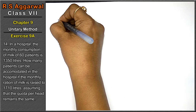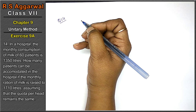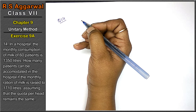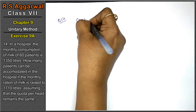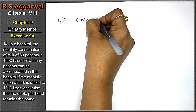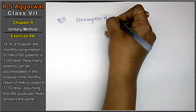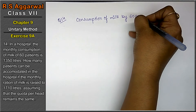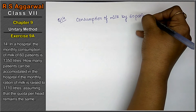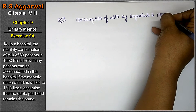Let's do question number 14 of chapter Unitary Method, exercise 9a. In a hospital, the monthly consumption of milk of 60 patients is 1,350 liters.